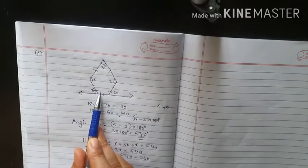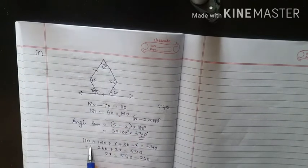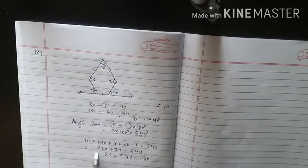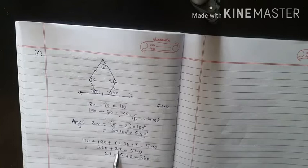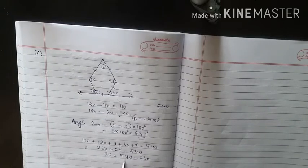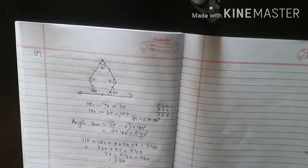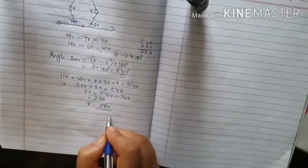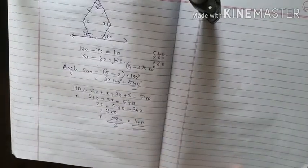This angle is 110, this is 120, this is 30. The sum is: 110 plus 120 plus x plus 30 plus x equals 540 degrees. That is 260 plus 2x equals 540. So 2x equals 540 minus 260 equals 280. Therefore x equals 280 divided by 2, which is equal to 140 degrees.